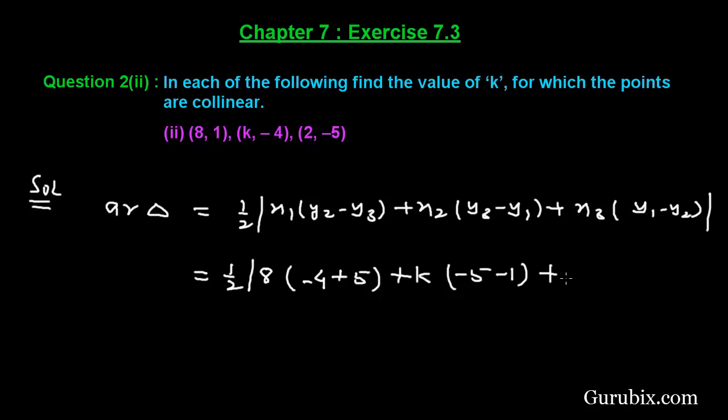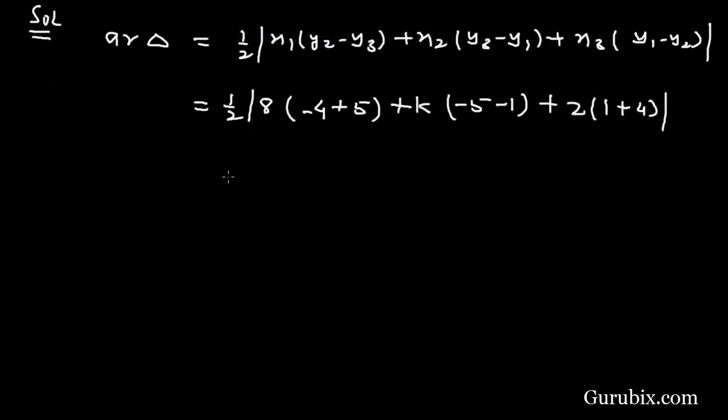This equals 1/2 |8(1) + k(-6) + 2(5)| = 1/2 |8 - 6k + 10|.